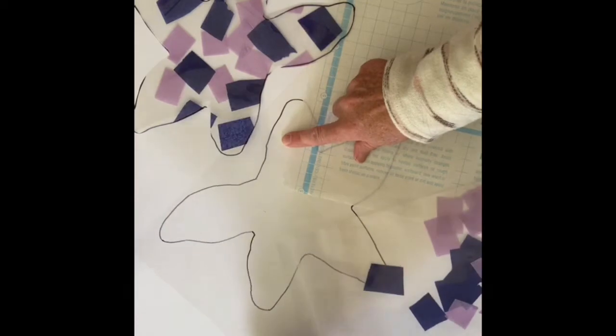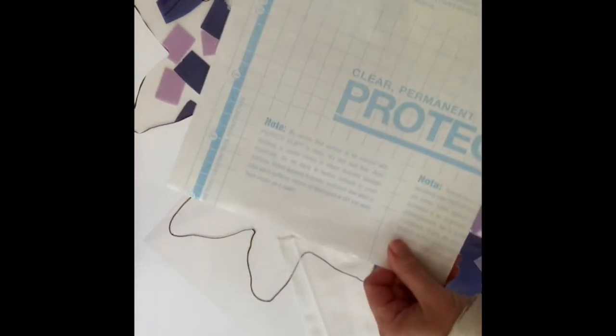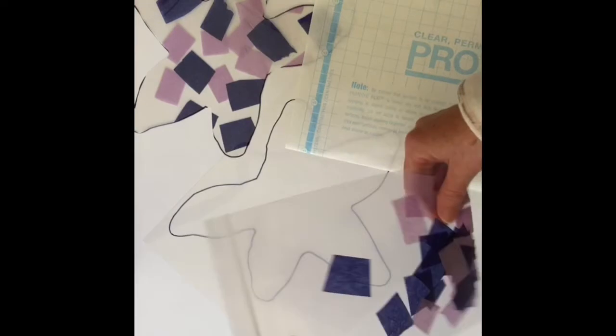So you have three different things: your sea star already drawn out on your film, you have a piece of contact paper, and then you have your tissue paper.